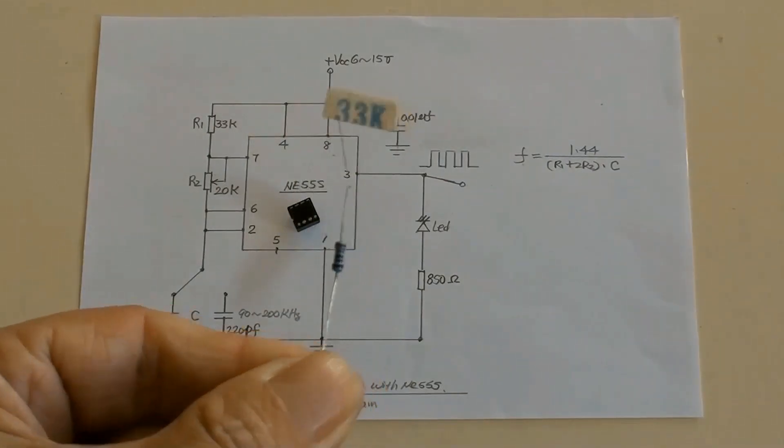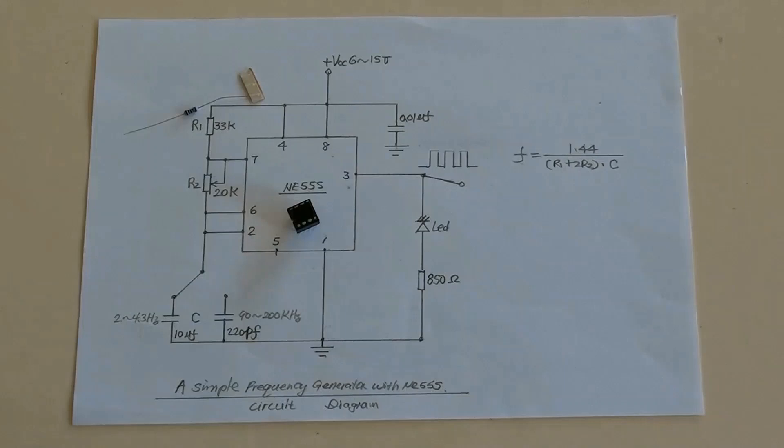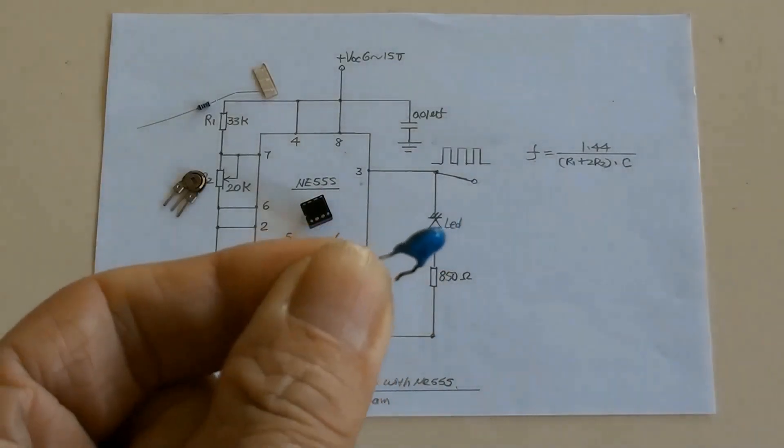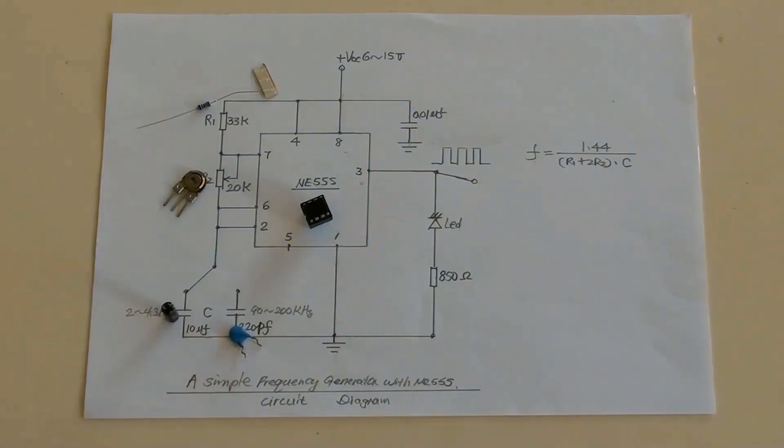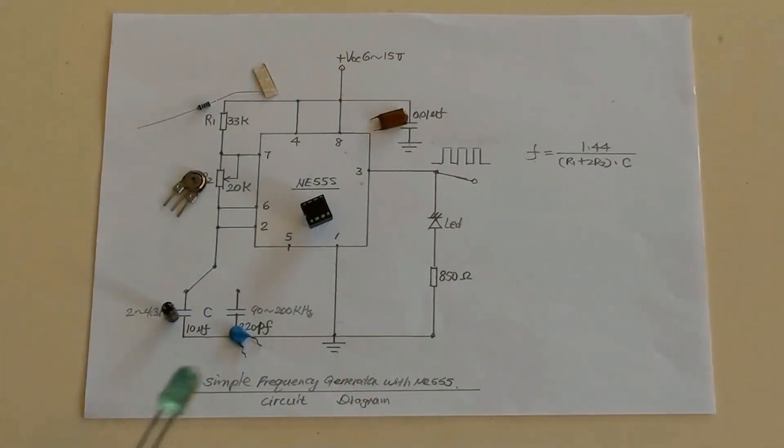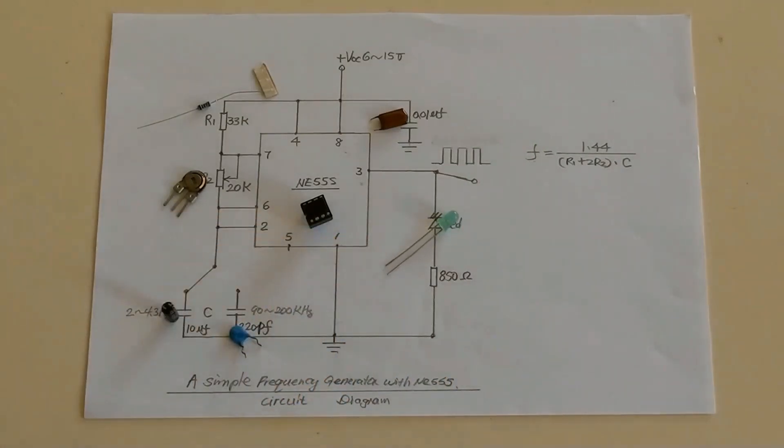A resistor with 33k ohms is here. A potentiometer with 20k ohms is here. A capacitor with the value of 10UF and 25V is here. A 220PF capacitor for high frequency is here. A capacitor with the value of 0.01UF for a filter is here. A LED for the output indicator is here. An 850 ohms combined resistor is here.